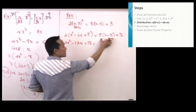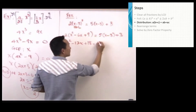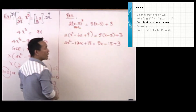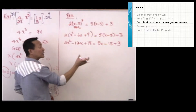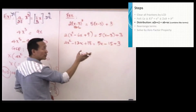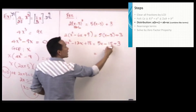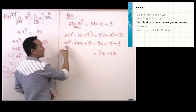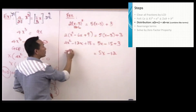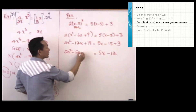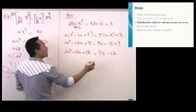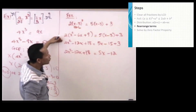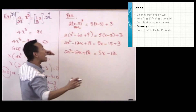On the right side I distribute 5 in: 5x minus 15, plus 3. Then I combine like terms on each side before moving to the next step. On the right, negative 15 combined with 3 gives negative 12. On the left, there are no like terms, so I keep them the same. The next step is to rearrange terms after FOILing, distributing, and combining like terms.